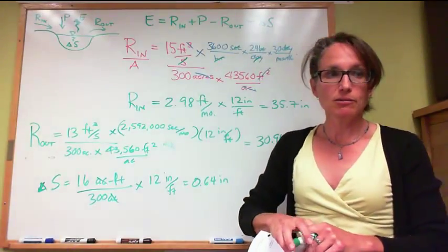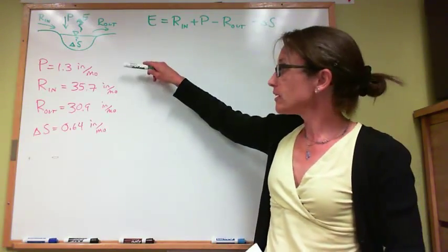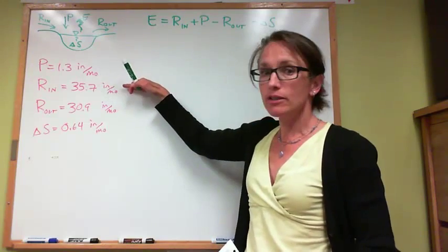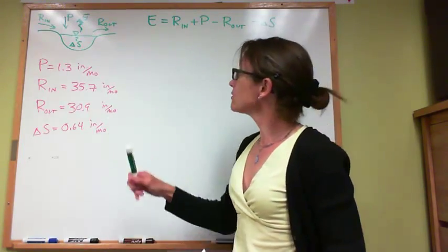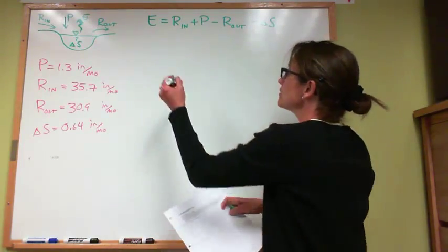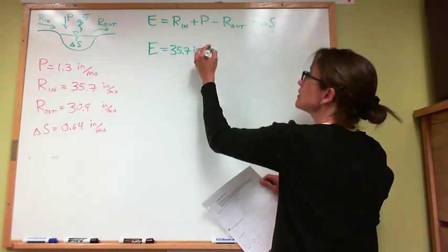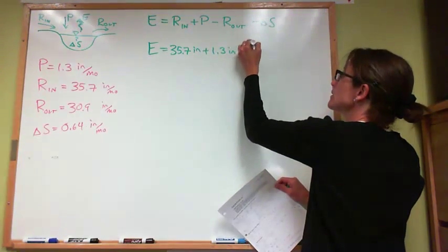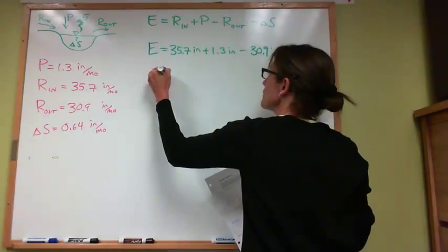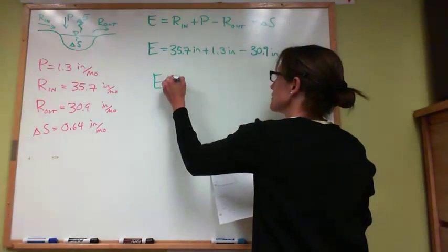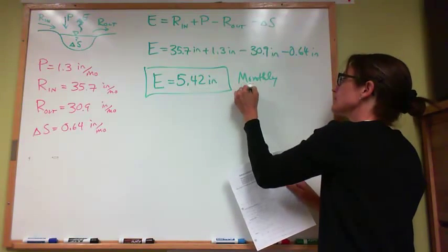We can now plug everything into our equation. Evaporation equals R-in plus P minus R-out minus delta S: 35.7 inches plus 1.3 inches minus 30.9 inches minus 0.64 inches. Our result is that evaporation equals 5.42 inches. This is our monthly evaporation.